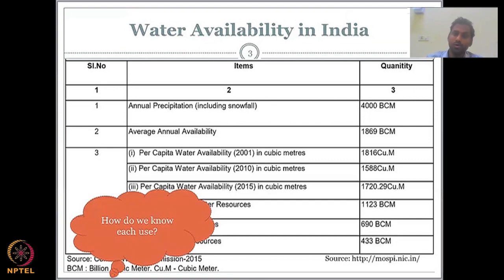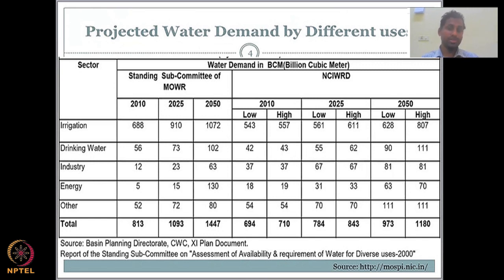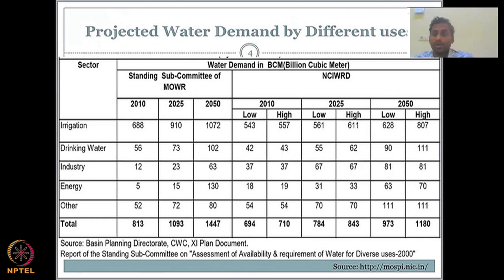Now, how do we know how each sector uses water? Looking at sectors that consume water, India is an agrarian nation, so most water is used for irrigation, followed by industry and drinking water. Domestic consumption is still high because of the population. Irrigation and agriculture water use is the top priority, followed by drinking water, then energy and industry combined, and other uses such as domestic supply for washing and cleaning.